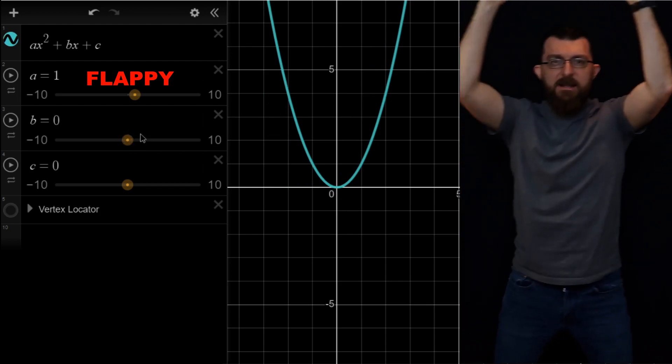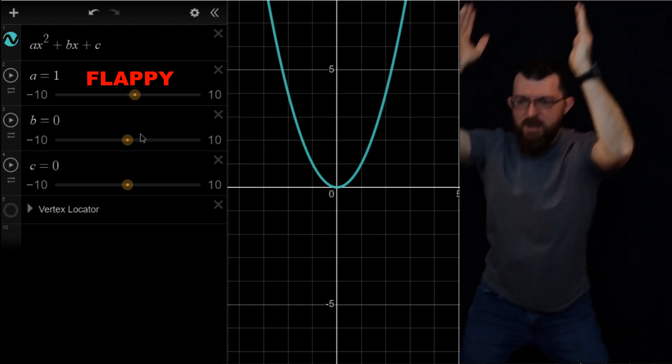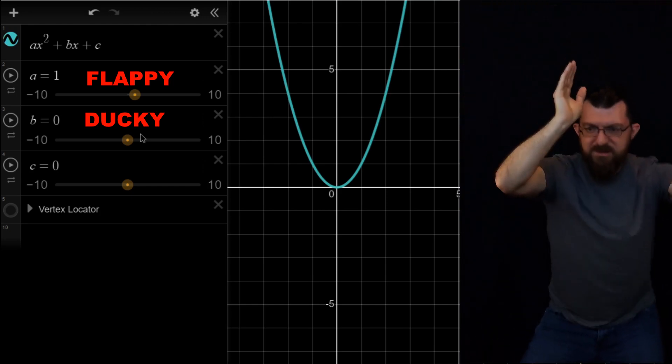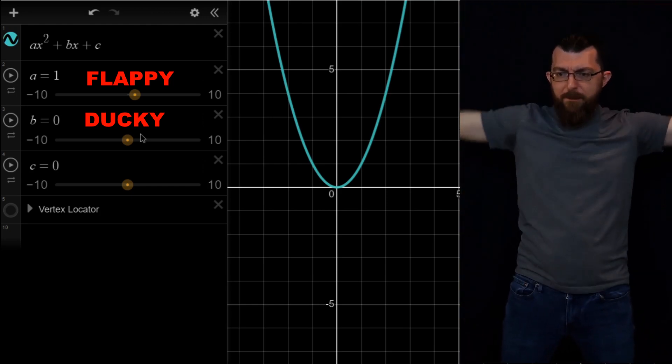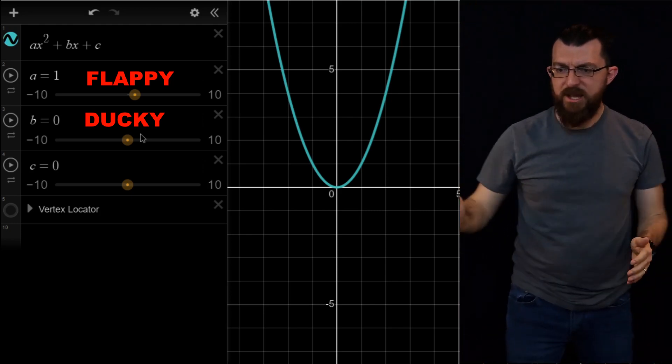It just kind of ducks down to the left or ducks down to the right. So it's making it do something kind of like this. Let's see, what should we call that? If it's making it duck, we can call that the ducky one, right? It's making it duck side to side. So we've got flappy and we've got ducky. Those are the two sliders that we've investigated so far.